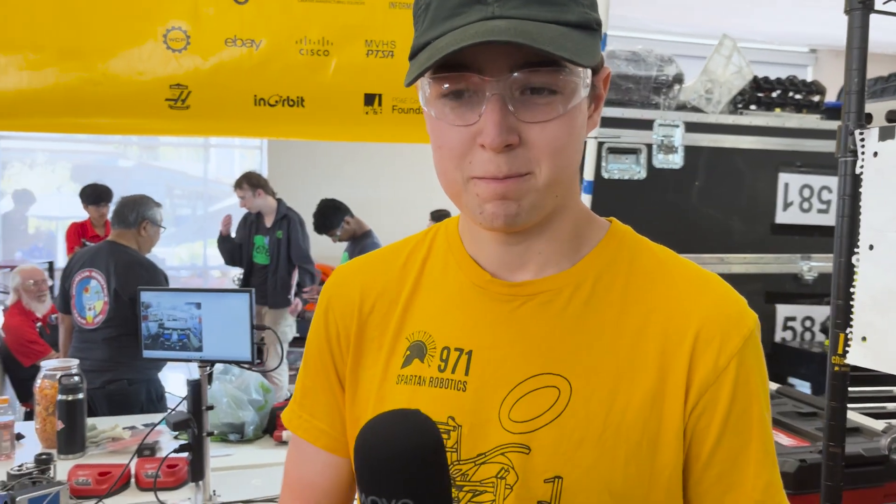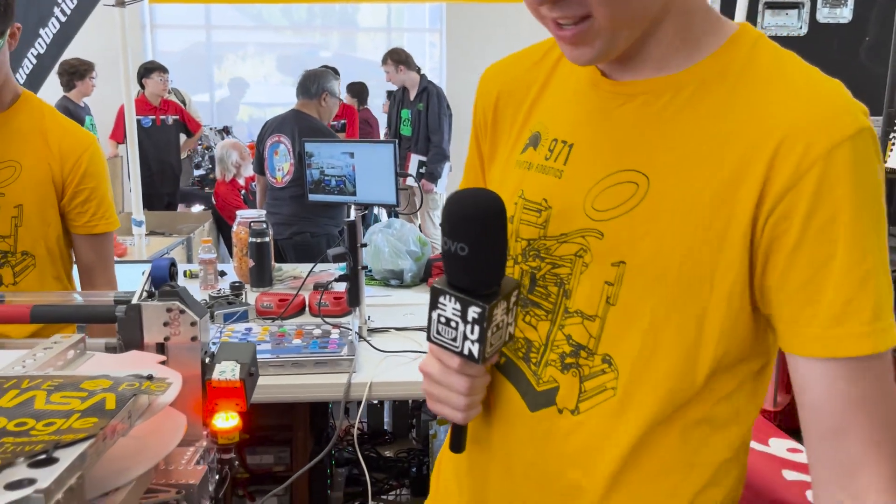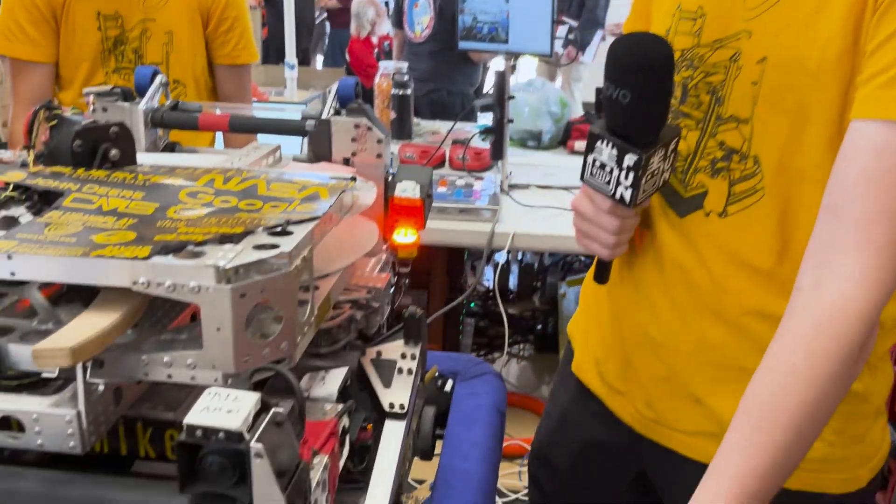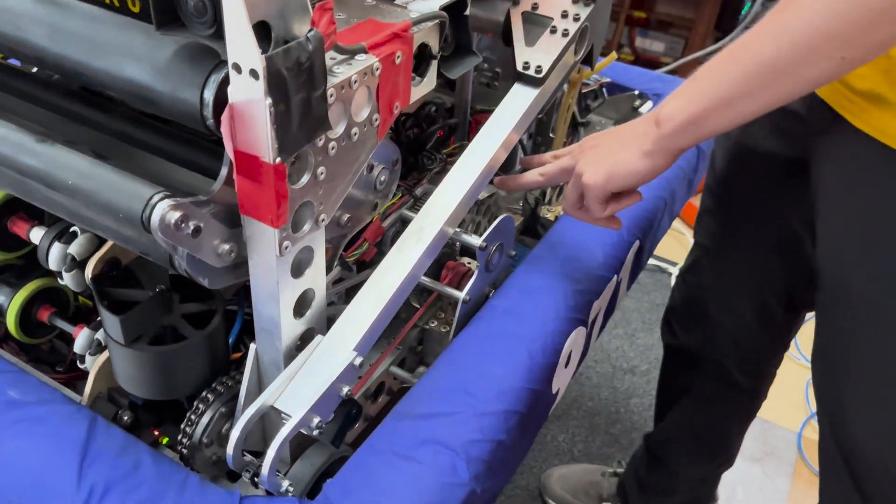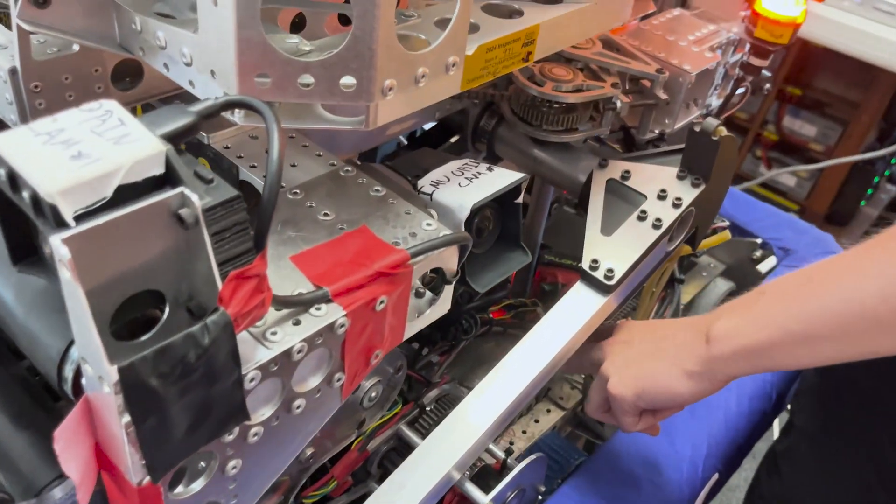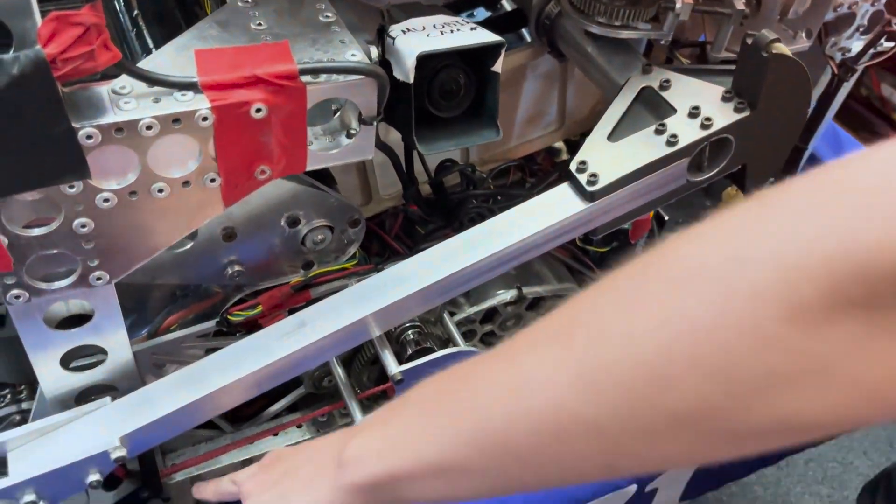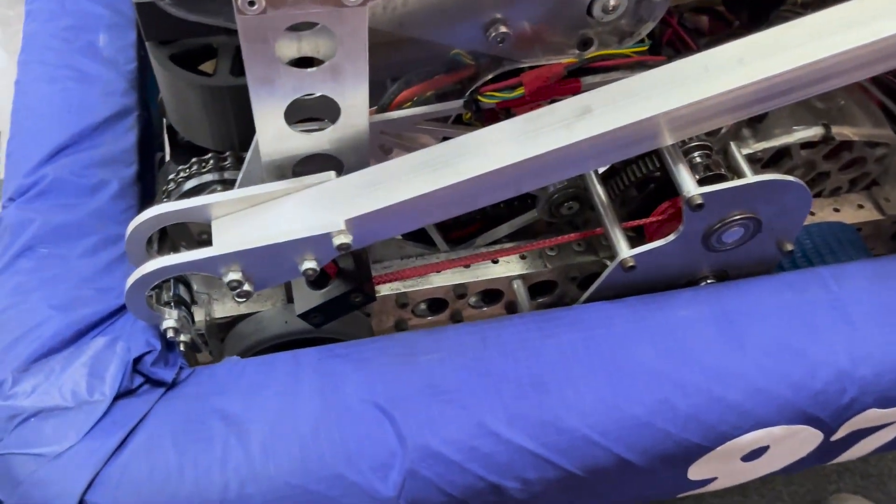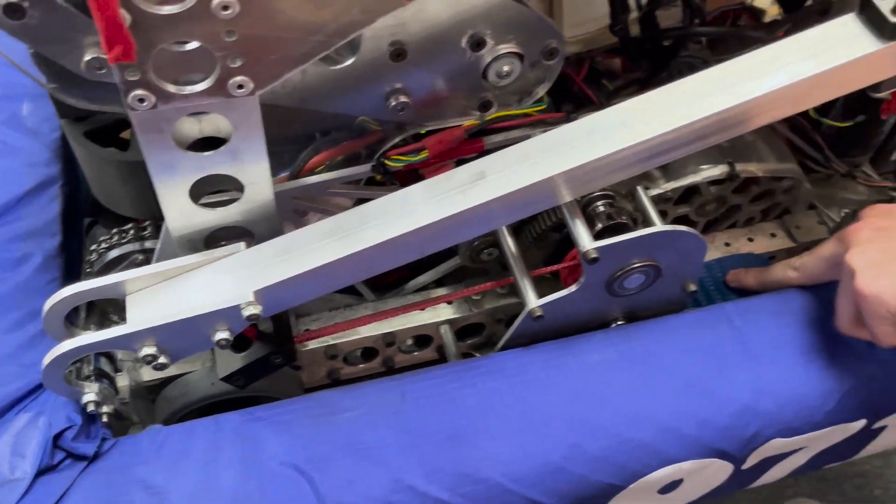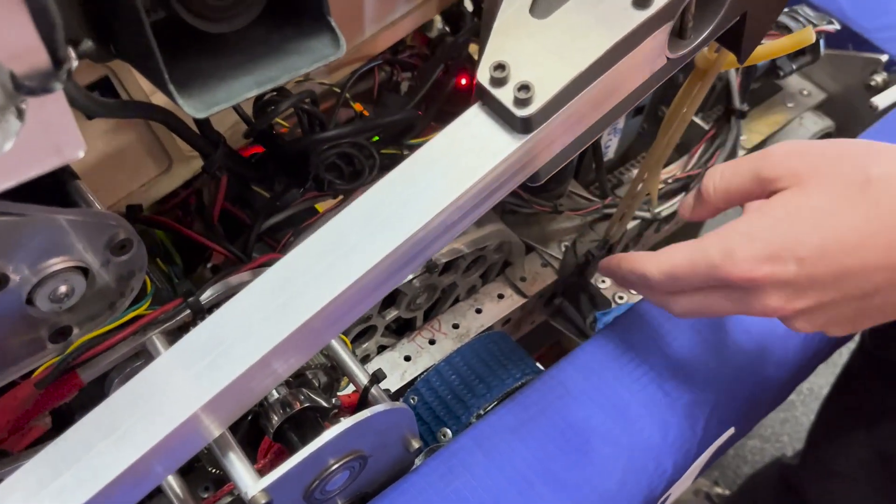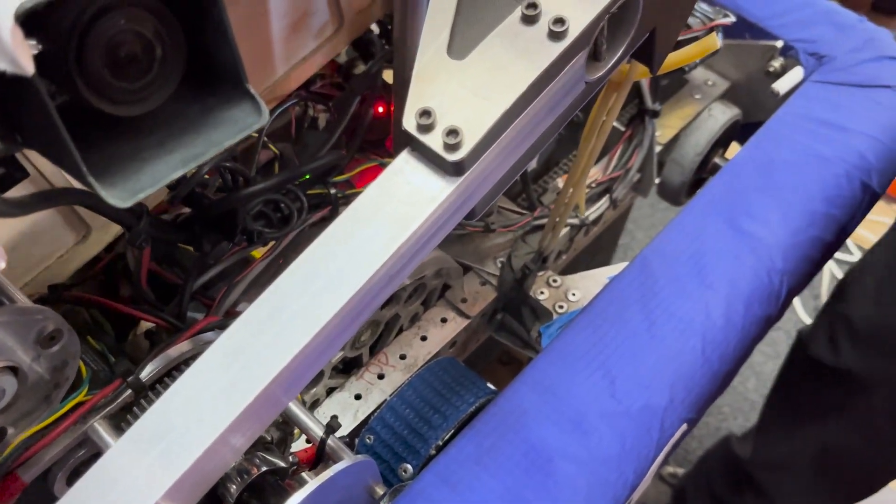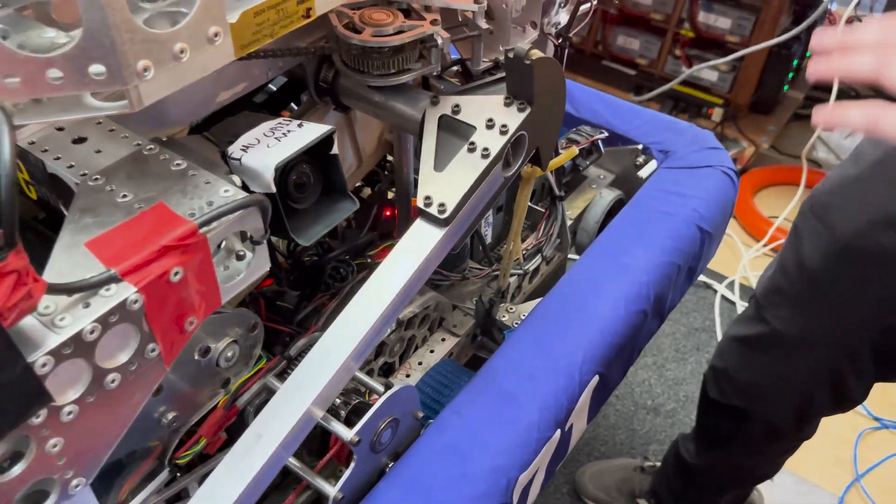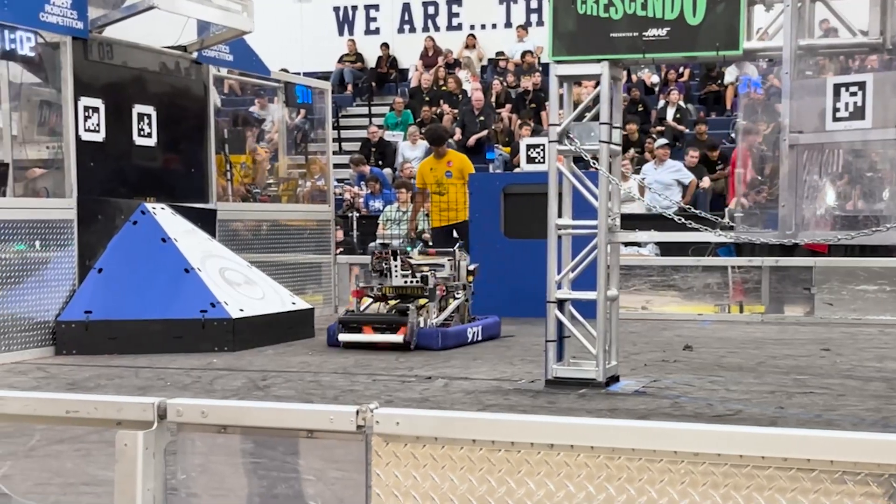All right, Matt, take it away. So I'm going to start with the drivetrain. We are using a tank drivetrain with two Krakens on each gearbox to power it. We have two Colsons on the corners here, two thin Colsons. And then on the middle, we have these custom static wheels that we made from 3D printed parts and some hubs and then some static material. Not really special, just kind of like a standard tank drive.